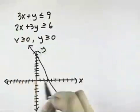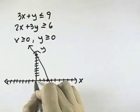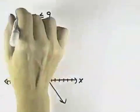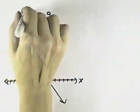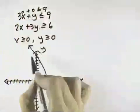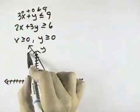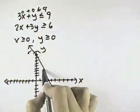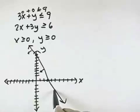If I wanted to test to see which side to shade, I could test the origin as my test point. I'd have 0 plus 0 is less than or equal to 9. That says I'm going to shade the line in this direction.